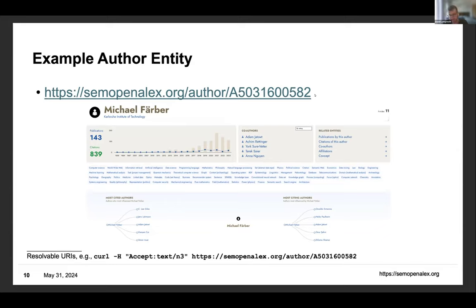Because the data is modeled in the graph, we can also very easily display related entities for this author, like for example his co-authors, the most citing authors, or other related entities. Of course, the data is also machine accessible via curl and resolvable URIs.